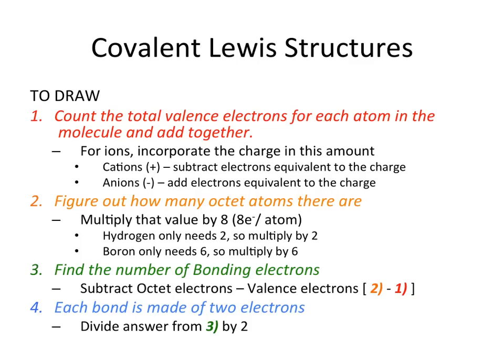Covalent structures are a bit more challenging because we're trying to make an actual molecule. The first step is to count the total number of valence electrons for each atom and add them together. For example, if we had N and O: nitrogen is in group five, so it has five valence electrons; oxygen is in group six, so it has six. Adding those together gives us 11 total valence electrons for this molecule.